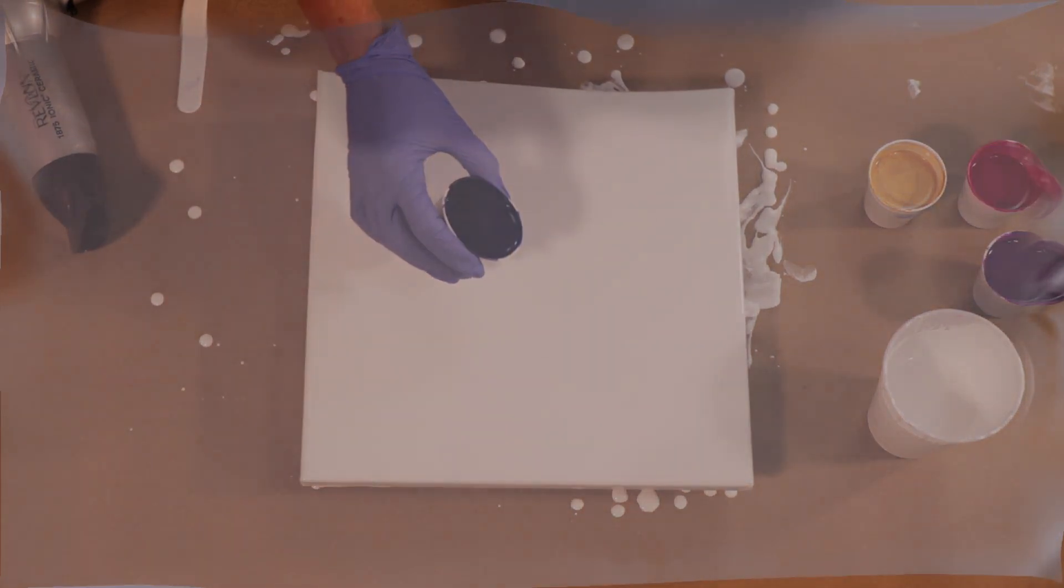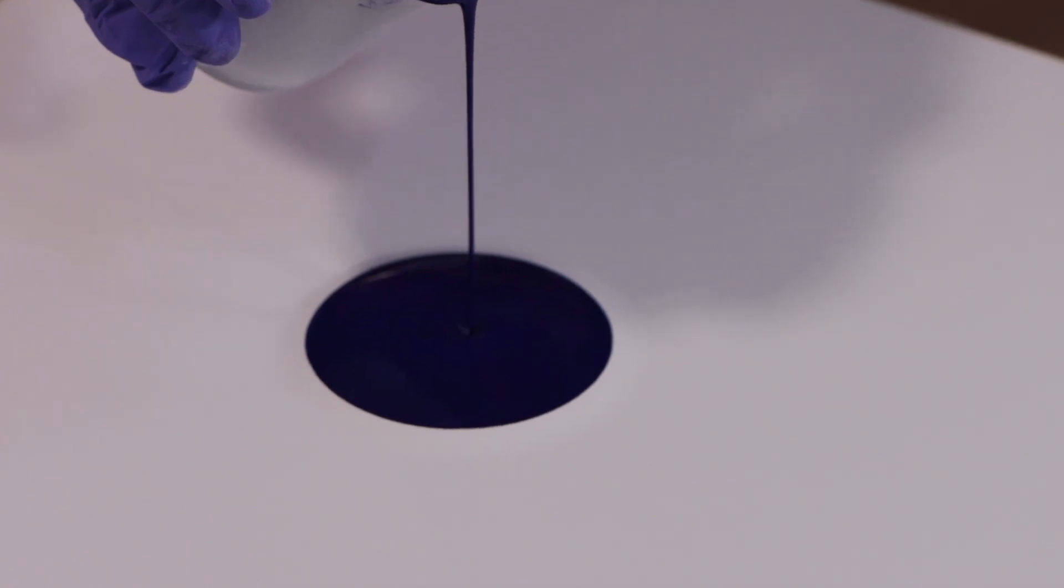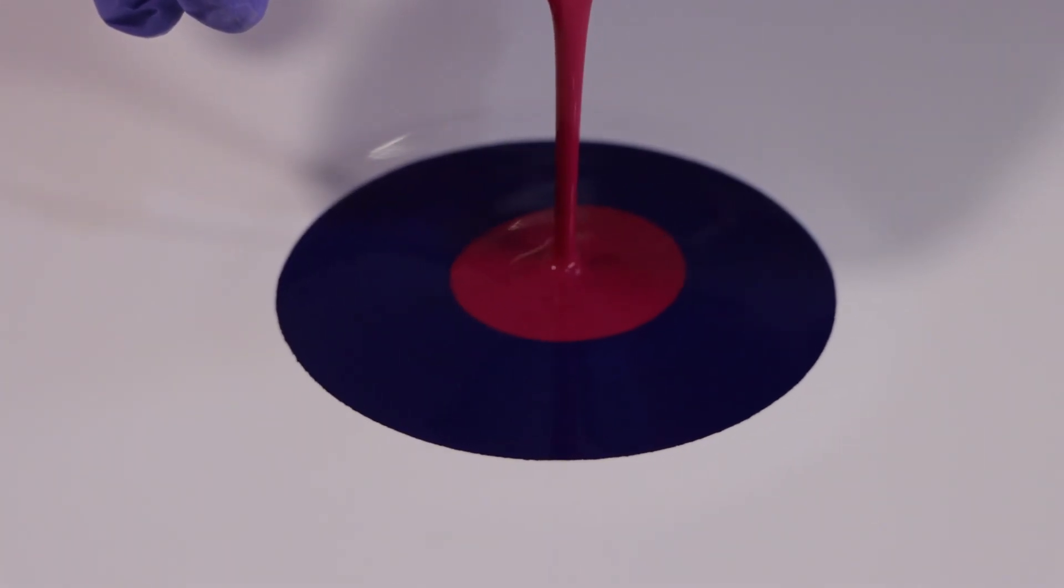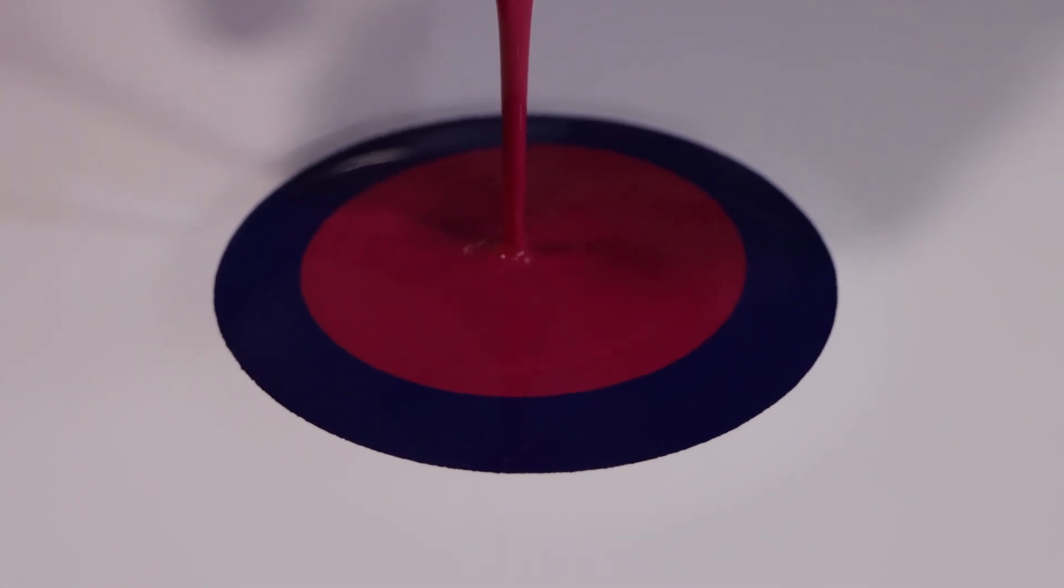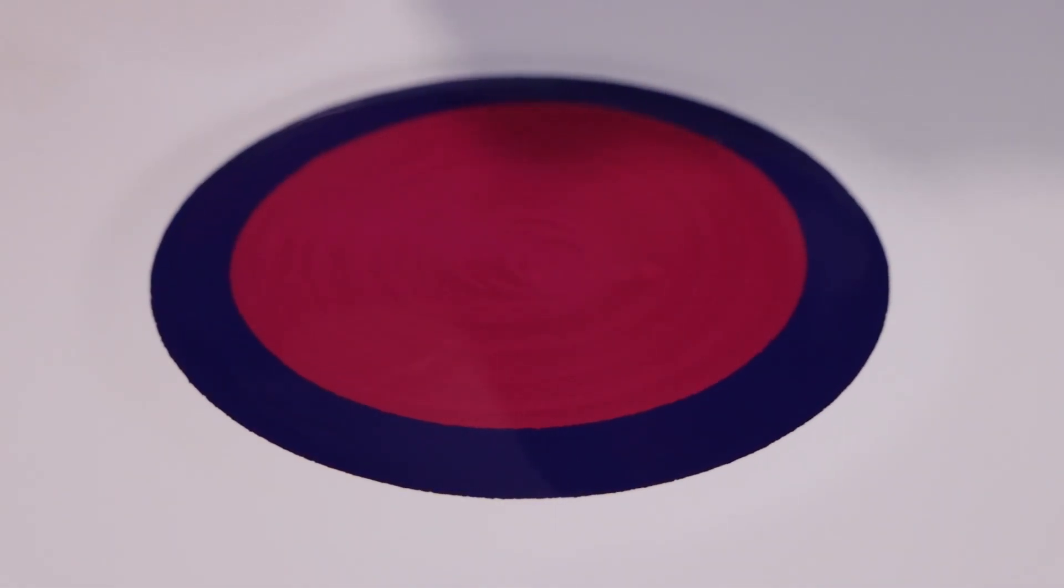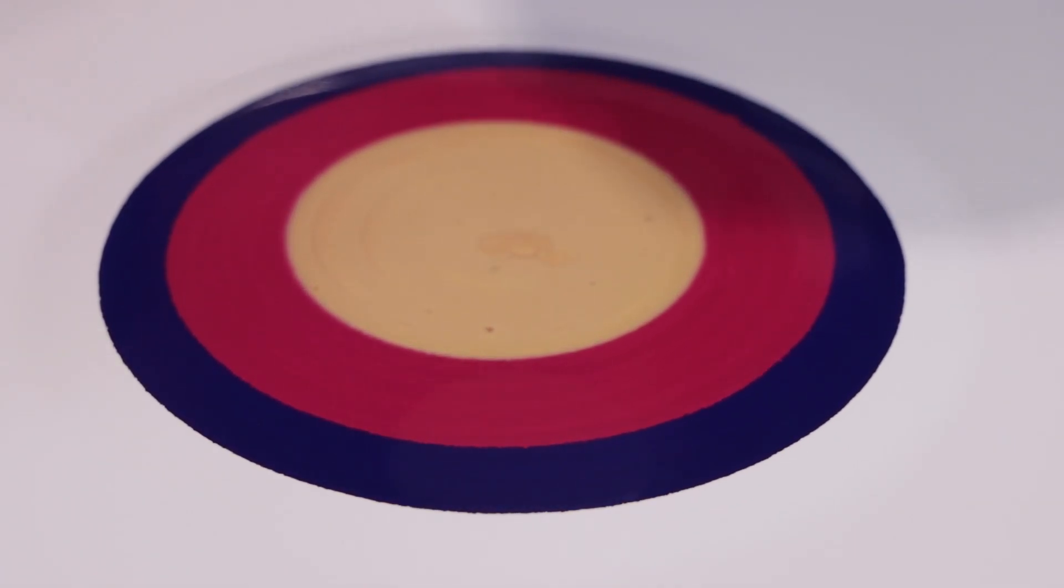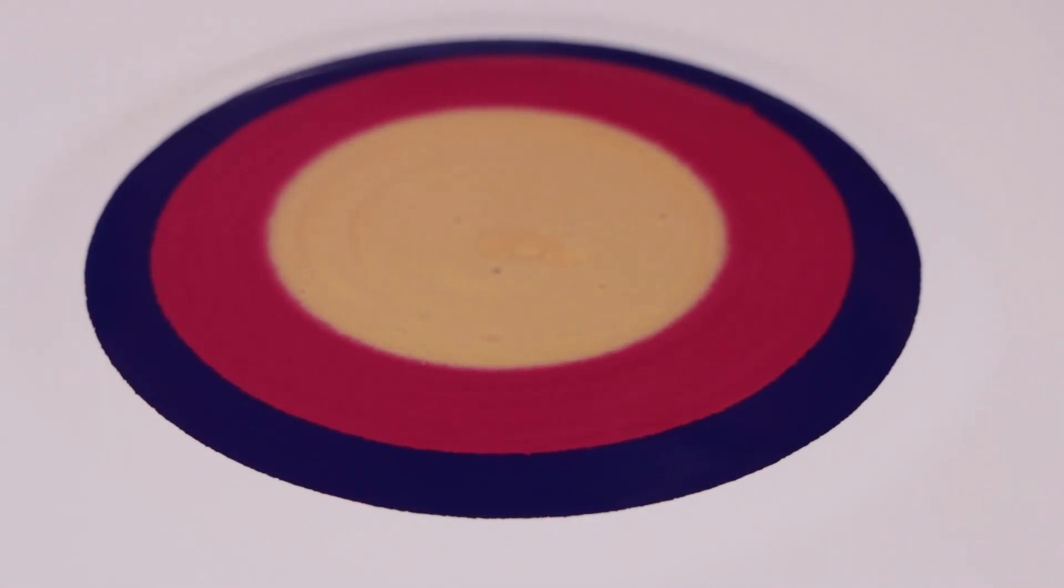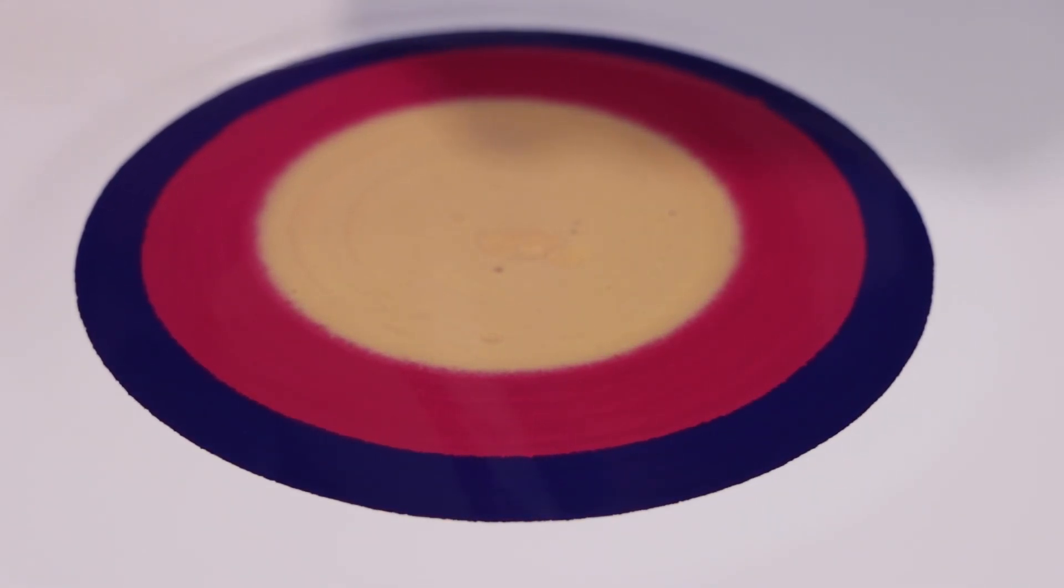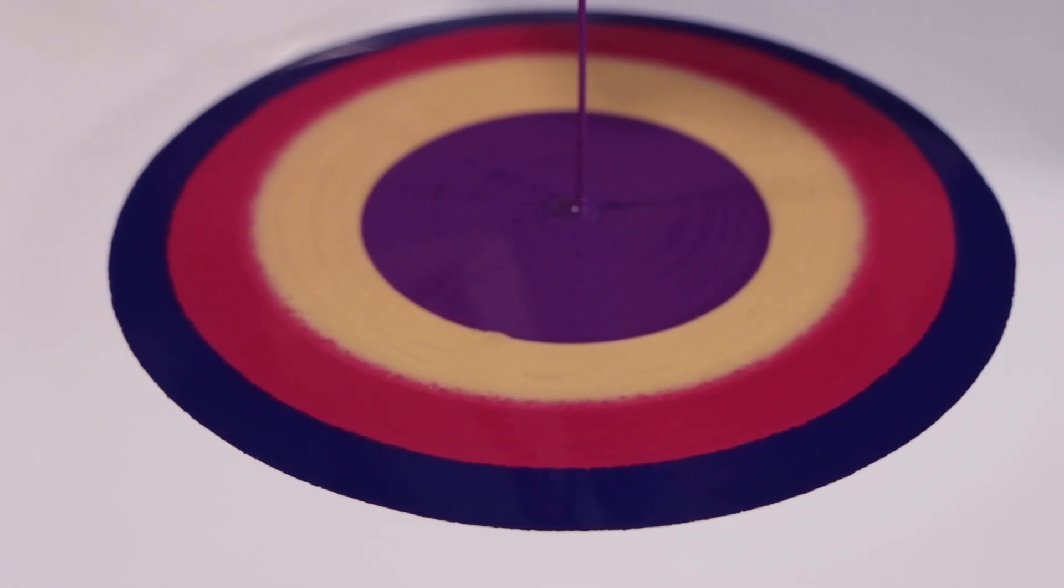And I'm gonna start with the blue. Now these paints are definitely thinner than normal for me. So this is a technique that I don't do a lot. So it's a little bit out of my comfort zone but that's okay because that's how you learn. And I want to do a Dutch pour. So I gotta do it. Just gotta do it.